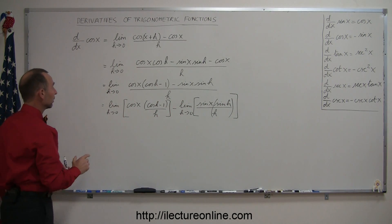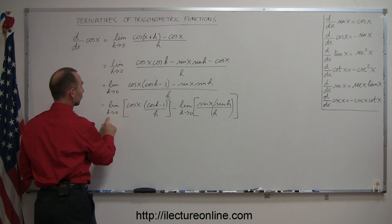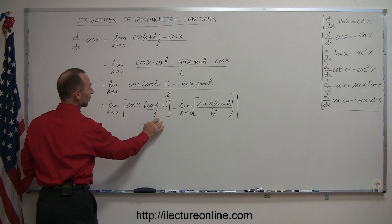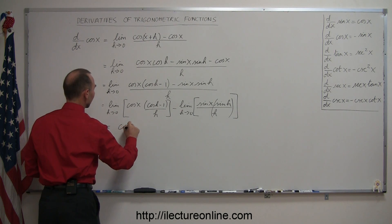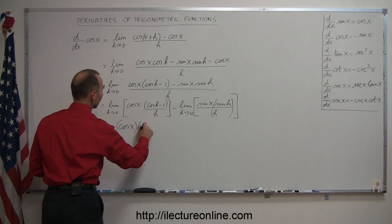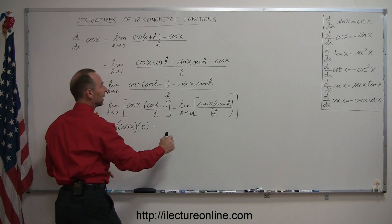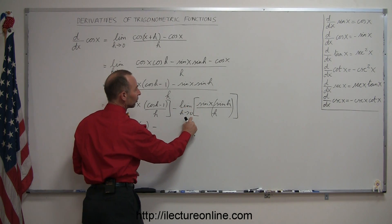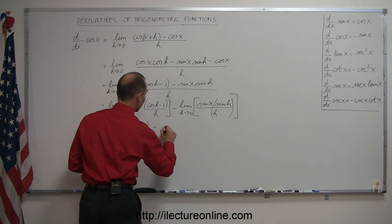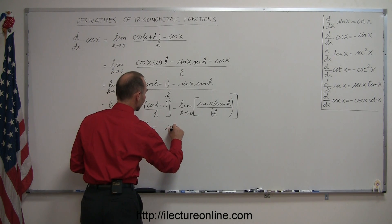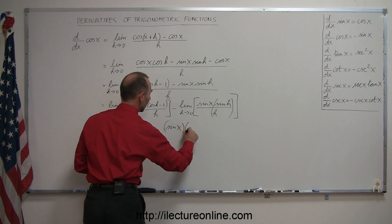Now, the theory goes that if you take the limit as h goes to zero of the cosine of h minus one over h, that that is equal to zero. So this then becomes equal to the cosine of x times zero minus, and if you take the limit as h goes to zero of sine of h over h, that is equal to one. And so that then is equal to minus the sine of x times one.